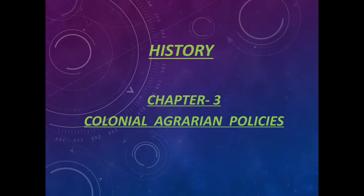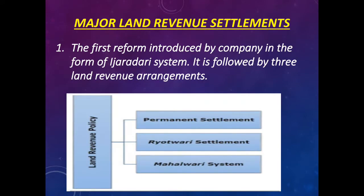Chapter 3: Colonial Agrarian Policies. Here we are going to learn about major land revenue settlements. The first reform introduced by the company came in the form of the Ijardari system, then came the Permanent Settlement, then Ryotwari and Mahalwari system.